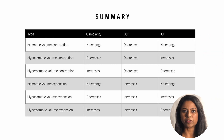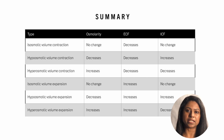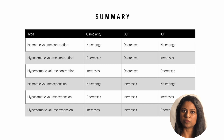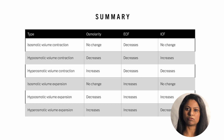Let's summarize the important changes in fluid compartments. In isoosmotic volume contraction, osmolarity stays the same; ECF decreases while ICF stays the same. In hypoosmotic volume contraction, both osmolarity and ECF volume will decrease while ICF volume will increase. In hyperosmotic volume contraction, osmolarity will increase while both ICF and ECF volume will decrease.